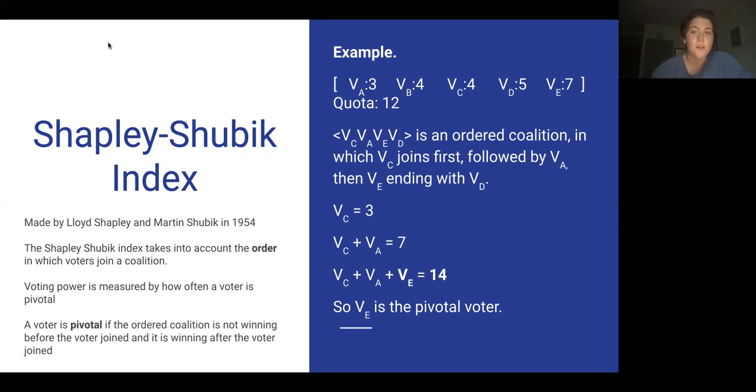When we just had the first voter, voter C, the weight of the whole coalition was just three, so it was not enough to pass. When A joined, the weight of the coalition went up to seven, still not enough. But when voter E joined with their seven votes, the weight of the coalition went up to 14 votes, which then passed the quota. Because voter E was the one that tipped the coalition from losing to winning, they are the pivotal voter. That counts as one mark for them. Finding out your index is just asking how many times each voter was pivotal.